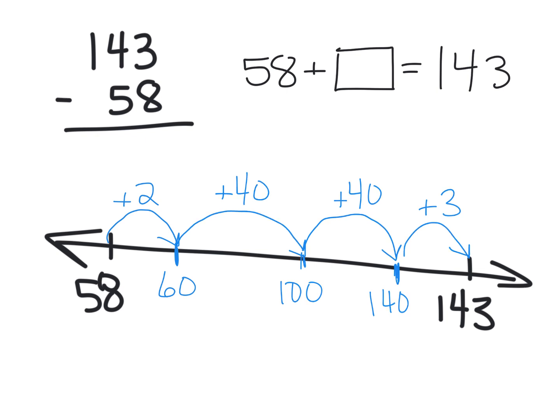And so to get the answer to our missing addend, I'm going to take all of these numbers and add them up, and I can do this in my head. 40 plus 40 is 80, 2 plus 3 is 5, so the answer is 85. So what's our answer to 143 minus 58? The answer is 85.